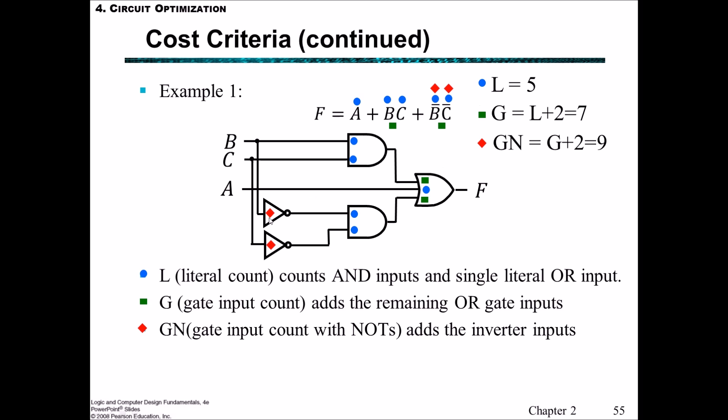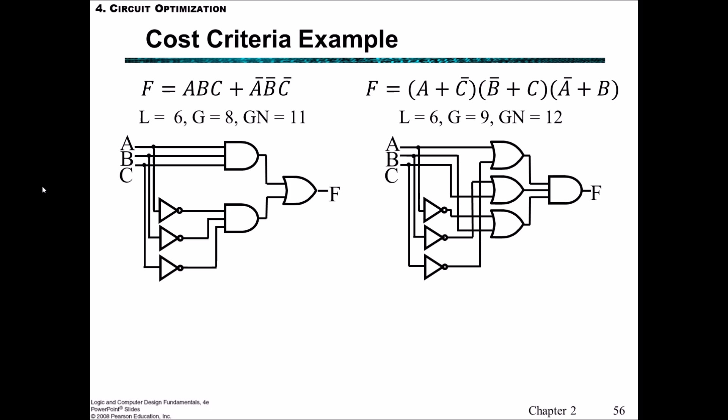So let's look at another cost criteria example. And here we've got two circuits. The first one shown is a representation of this function, and there are six literals. In terms of the gates, we have the literals plus the terms. So we have two terms, one term here, another term here. So we've got six plus two is eight. And then in terms of including the negations, then we have another three. So eight plus three gives eleven.